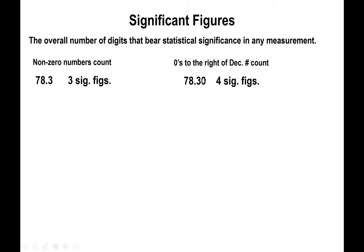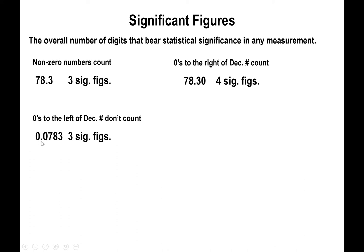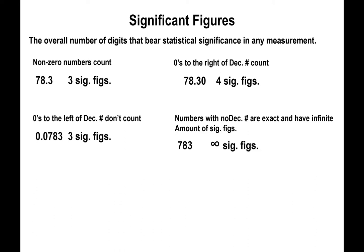However, when zeros do not have a non-zero number preceding them — decimal or not — those zeros do not count. Notice that the first zero doesn't have any non-zero number before it, the second zero also doesn't, so they don't count. The only numbers that count are the 7, the 8, and the 3, which are non-zero.